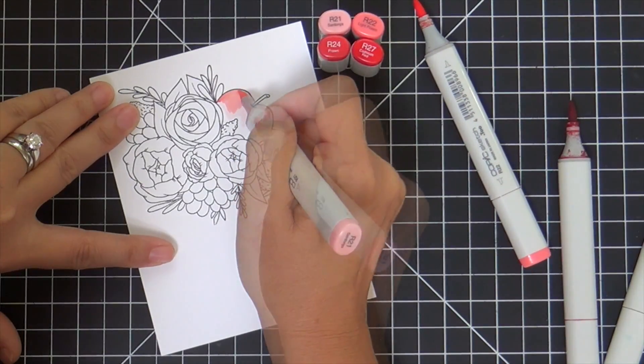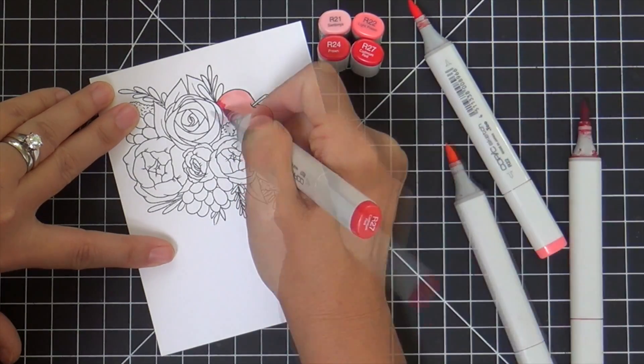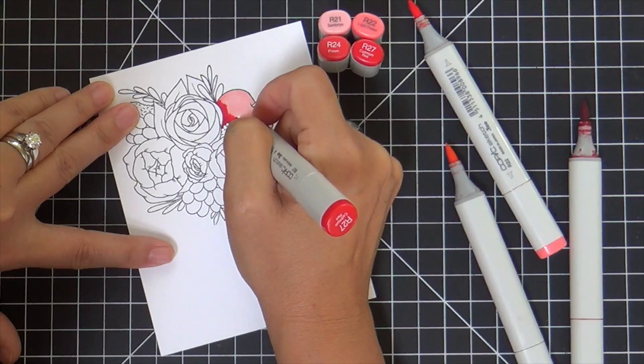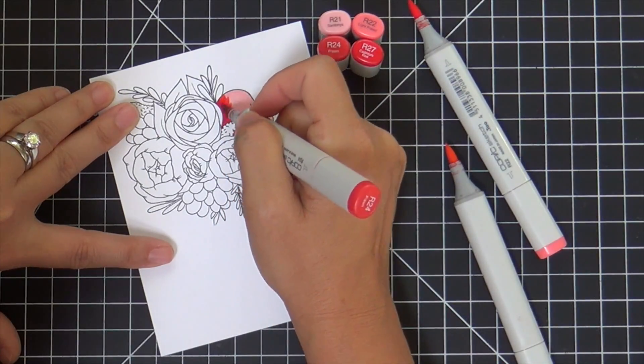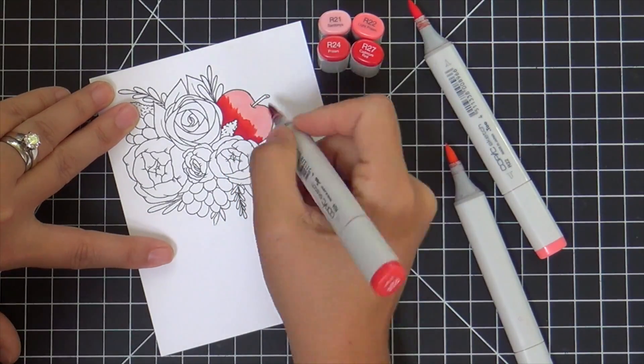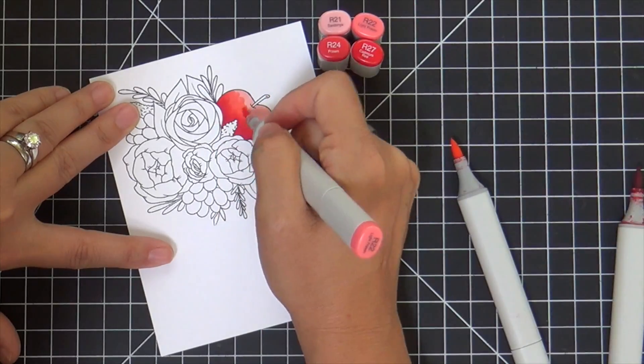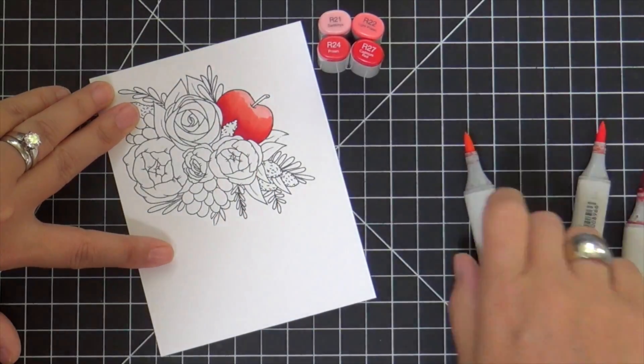I stamped the image with Memento Tuxedo Black ink onto a panel of Neenah Solar White cardstock, and I'm going to color this in with my Copic markers.